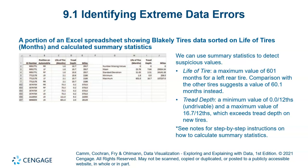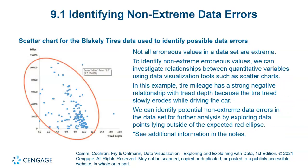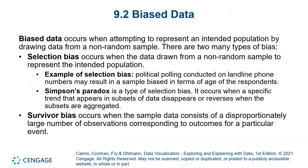We have two kinds of errors. One is extreme errors, which affect statistics like mean, minimum, maximum, variance, and standard deviation. The other is non-extreme errors, such as outliers or anomalies — data points that fall outside the main cluster.